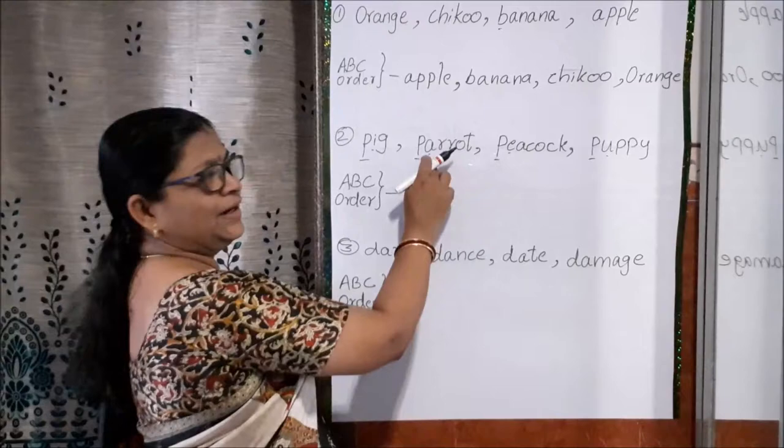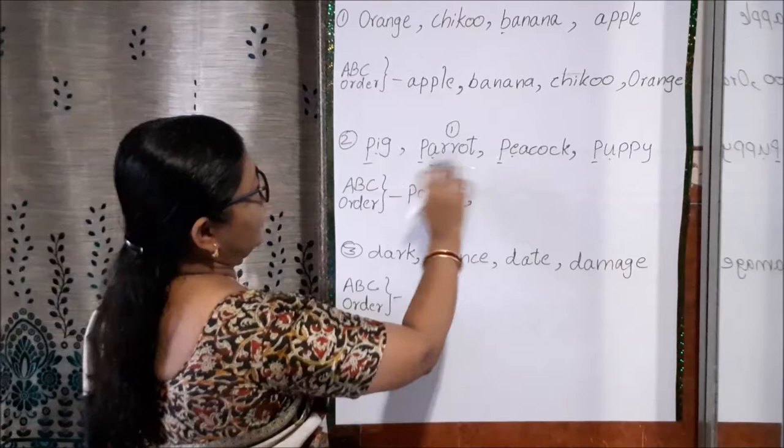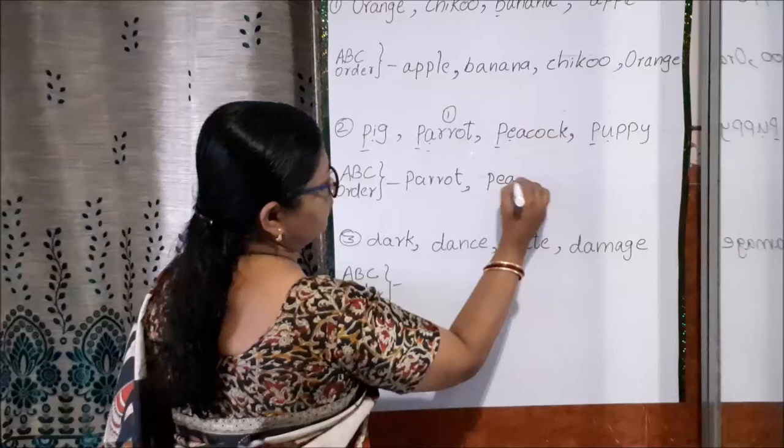So A is here in this word. So we will take this parrot as a first word. So let's write here, parrot. Okay? After that now, after A over then B, C, D, we have to see the second letter. Here E is given, E is the next one then. So peacock will be the next word. So let's write peacock. Okay?